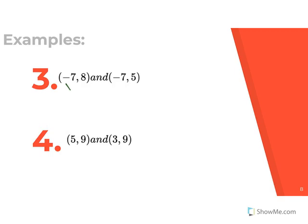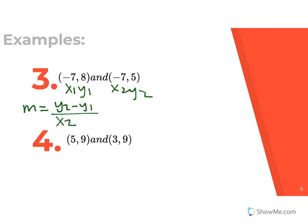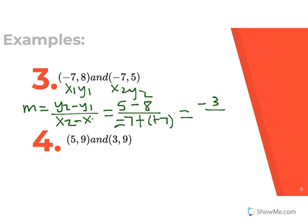Last two examples — keep practicing. Label x1, y1, x2, y2 and write m equals y2 minus y1 over x2 minus x1. y2 is 5, minus y1 which is 8, over negative 7 minus negative 7. 5 minus 8: opposite signs, subtract and keep the higher sign, giving negative 3. Negative times negative is positive, so the denominator is negative 7 plus 7, which is 0. Negative 3 divided by 0 — you are not allowed to divide a number by 0, so that is an undefined slope.